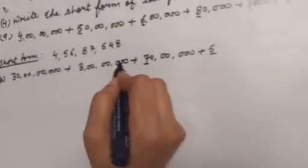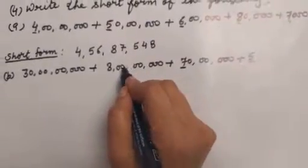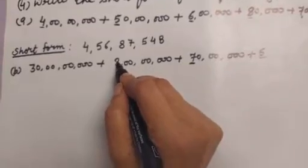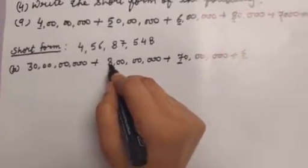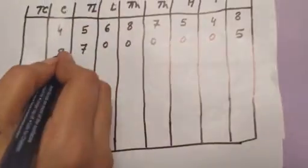Next — ones, tens, hundred, thousand, ten thousand, lakh, ten lakh, crore — we will write eight in crore column. Next — ones, tens, hundred, thousand, ten thousand, lakh, ten lakh, crore, ten crore — three in ten crore. We will write three in ten crore.